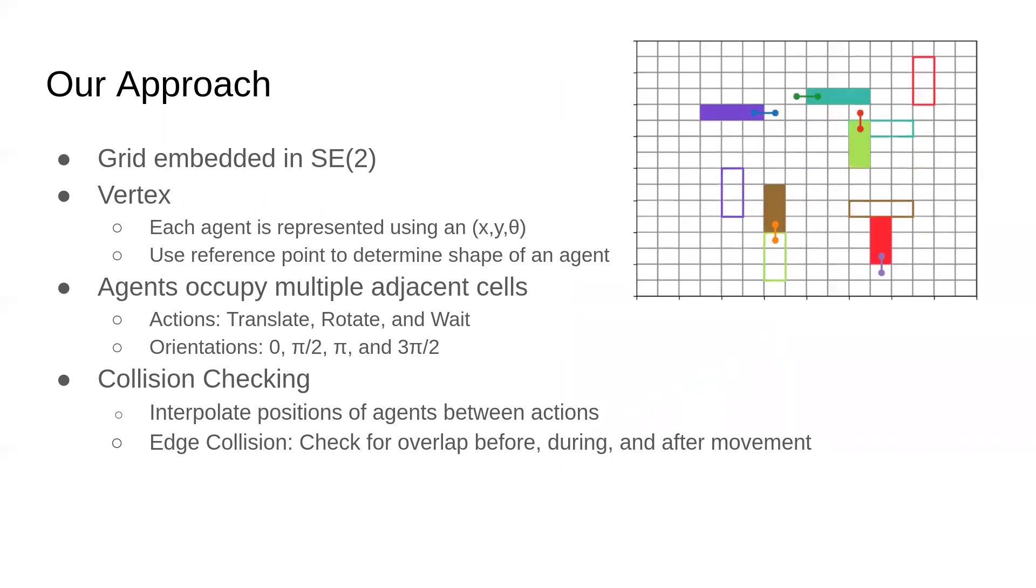For this work, we consider agents that occupy multiple adjacent cells. The actions available to agents are translating forward and backward, rotating clockwise and counterclockwise, or waiting in place. We assume that the agent has four possible orientations in cardinal directions.